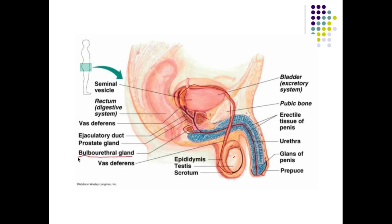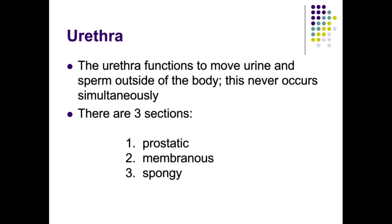The third accessory gland is the bulbourethral gland — a fun name to say. So we have three accessory glands in total. Accessory means that semen doesn't actually pass through them, but they are responsible for producing seminal fluid. The urethra has two functions in men: to move urine and sperm to the outside of the body. These cannot occur simultaneously, so a sphincter closes to prevent urine from coming out at the same time as semen.